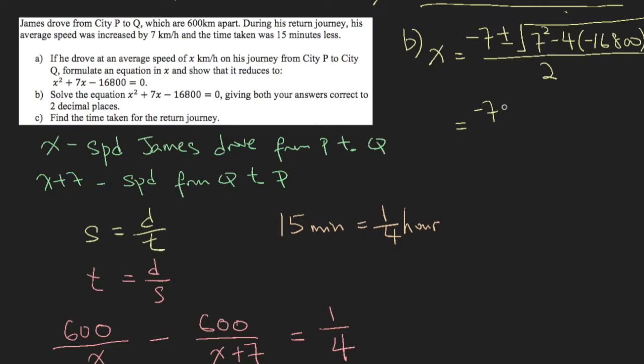So this reduces to the square root of 67249. So now you need to press your calculator and you will have two answers. One of the answers is 126.16 km per hour. Now the question asks you to give your answer to two decimal places.